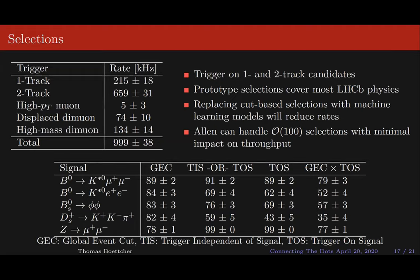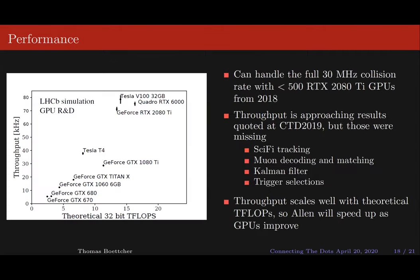While we've only shown five selections, Allen can handle up to order 100 selections with minimal impact on throughput. Allen can handle the full 30 megahertz collision rate with fewer than 500 RTX 2080 Ti GPUs — our reference card. These are GPUs from 2018, so they're already almost out of date. This throughput is also approaching the numbers quoted at Connecting the Dots 2019, but those numbers were missing big parts of the sequence: the SciFi tracking, the muon systems, the Kalman filter, and they made no trigger selections.